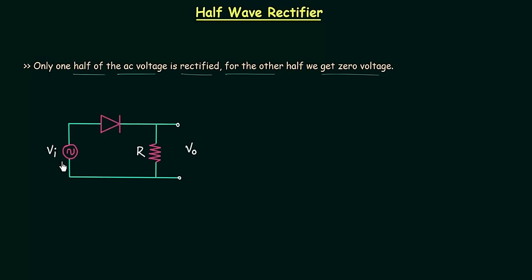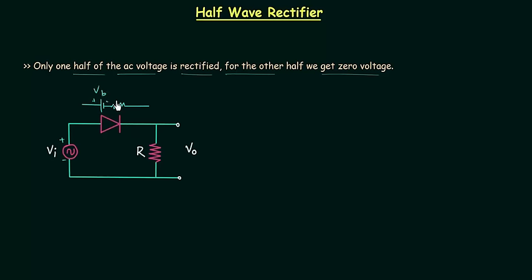In case of positive half cycle, this will be the polarity of input voltage VI and the diode will be forward biased because the P side is connected to the positive terminal and N side is connected to the negative terminal. I will replace the diode with its equivalent model. I am considering the piecewise linear model, in which we replace the diode with barrier potential and the diode resistance Rd.